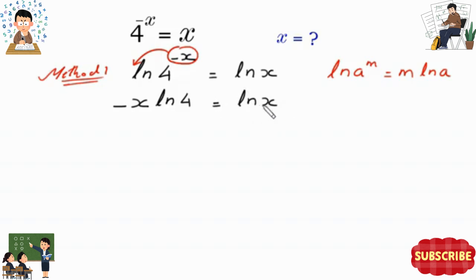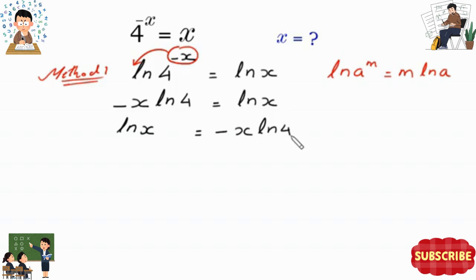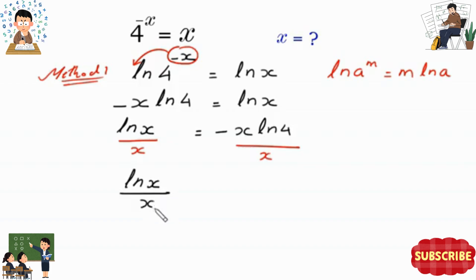We move ln of x to the left side and negative x times ln of 4 to the right side, giving ln of x equals negative x times ln of 4. Now we divide both sides by x. ln of x divided by x equals negative ln of 4, since the x on the right cancels.